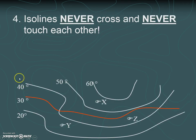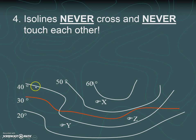Rule number four: iso lines never cross each other and they never touch each other. Think about why that is — the orange line represents places that are 30 degrees and the white line represents places that are 40 degrees. If two lines touched, it would mean that one point is both 30 degrees and 40 degrees. We know it's impossible for one point to have two different temperatures, so that's why your lines can never cross and can never touch each other.